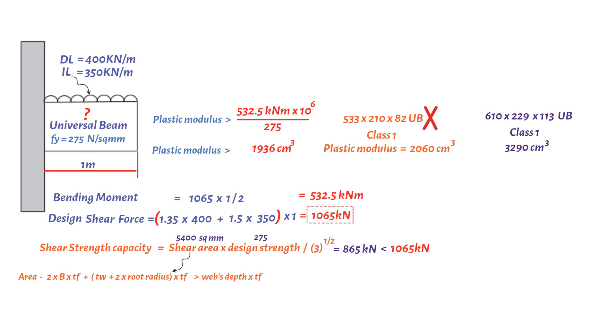If we work out the shear area of 610 by 229 by 113 UB section, we get 7137.5 square millimeters. As a result, the shear strength capacity would equal 7137.5 multiplied by 265 divided by square root of 3, which equals 1092 kilonewtons. It is acceptable, but the design shear of 1065 kilonewtons is greater than the half shear strength capacity.